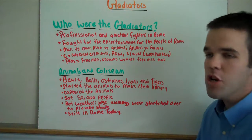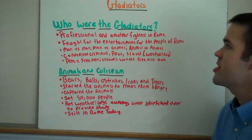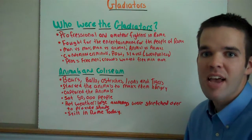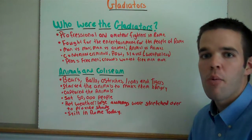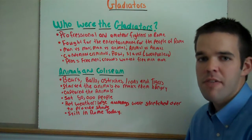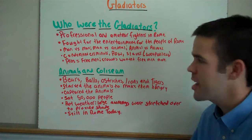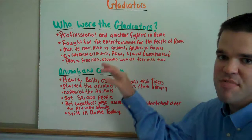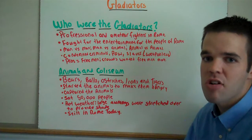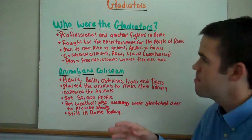Gladiators were professional and amateur fighters in Rome. They fought for the entertainment of the common people of Rome. It was almost like entertainment — a way of doing things like people would go to a sporting event or a concert. It would be the same aspect as that: people, instead of going to a concert or a sporting event, would go to the Colosseum to watch the gladiators fight.